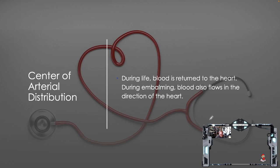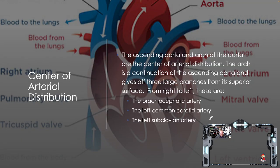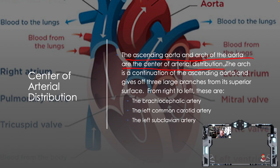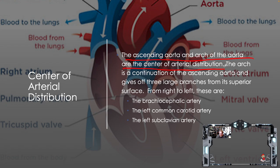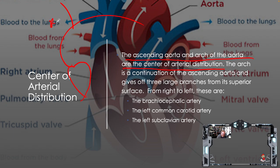During life, blood is returned to the heart. During embalming, blood also flows in the direction of the heart. The ascending aorta and arch of the aorta are the center of arterial distribution. The arch is a continuation of the ascending aorta and gives off three large branches from its superior surface: from right to left, the brachiocephalic, the left common carotid, and the left subclavian. Fluid starts coming in, and the first thing it does is fill the ascending aorta chamber right outside the heart.